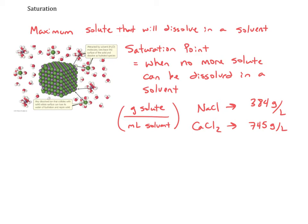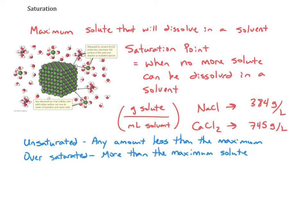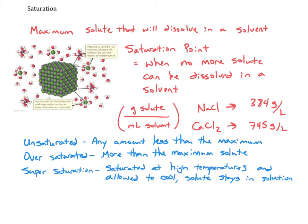Anything less than the maximum is considered unsaturated. If you put in more solute than the solvent can handle and crystals build up at the bottom, you have oversaturation — more than the maximum. There's also a special case: if you heat water to boil, saturate it with solute at near-boiling temperatures, and then allow the solution to cool gradually, the solute will stay in solution rather than precipitating out. This is referred to as supersaturation.